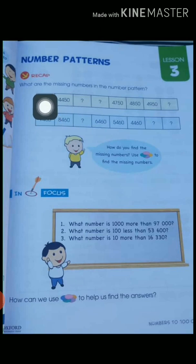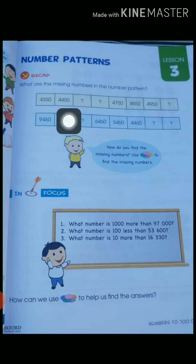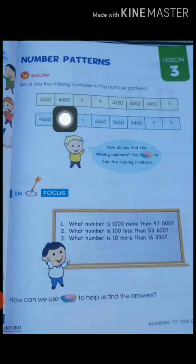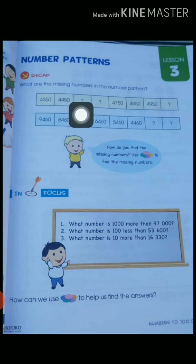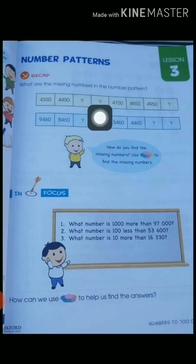When you add 100 to a number you get the next number. Similarly, we have to find the third number — so we add 100 to the second number. When we add 100 to 4,450 we get 4,550, which is the third number. When we add 100 to this third number we get the fourth number, which is 4,650.